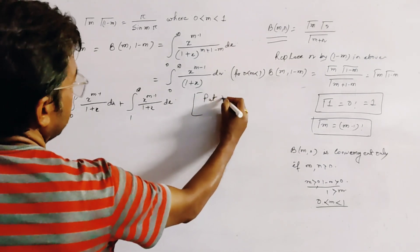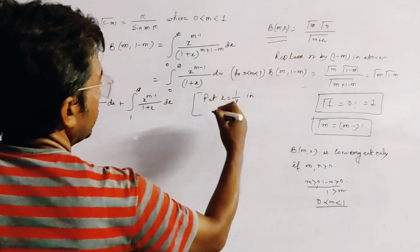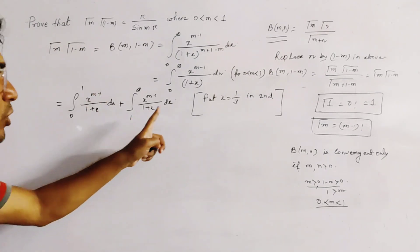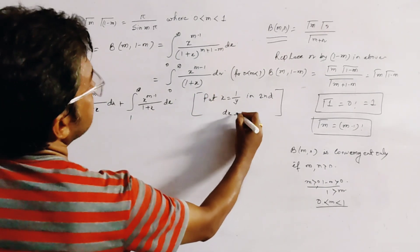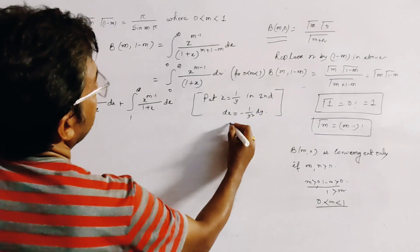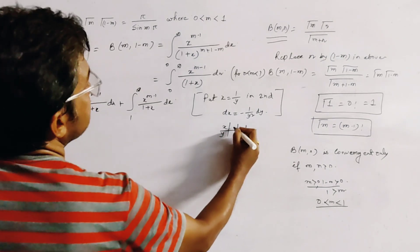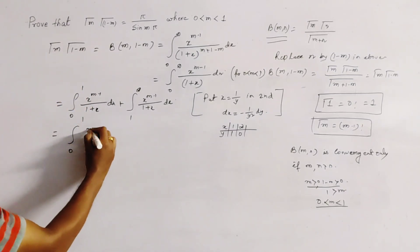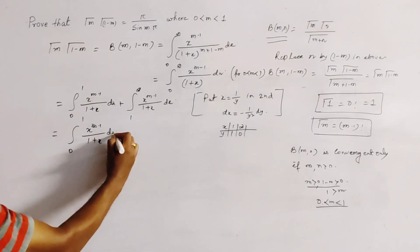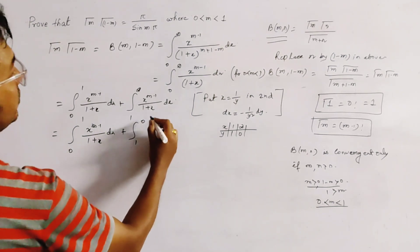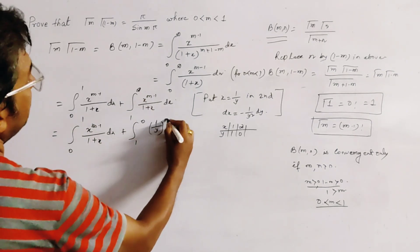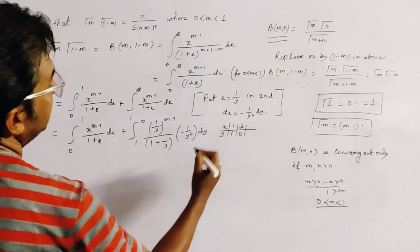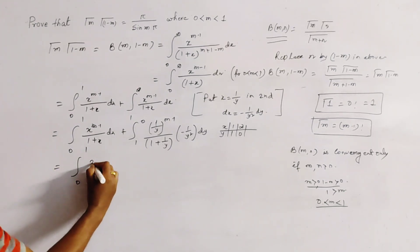We leave the first integral unchanged and substitute x = 1/y in the second integral. Then dx = -1/y² dy, and the limits change: x=1 → y=1 and x=∞ → y=0. So the second integral becomes ∫₁^0 (1/y)^(m-1) / (1 + 1/y) · (-1/y²) dy.